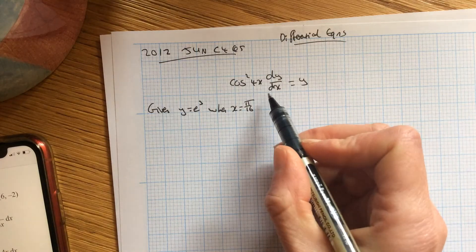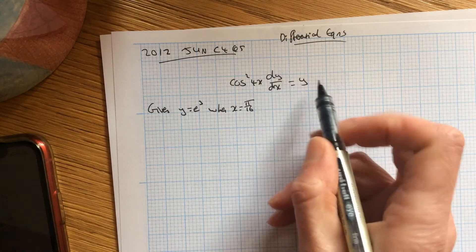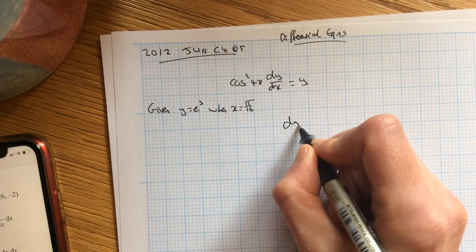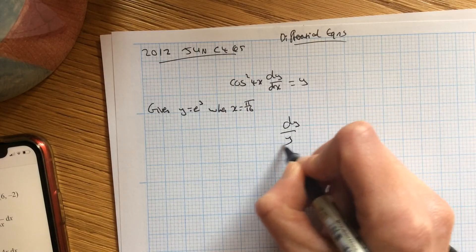Okay, so starting with this one here, I'm going to separate the variables. So the x's are going over to the far side, and the y's are coming over here.